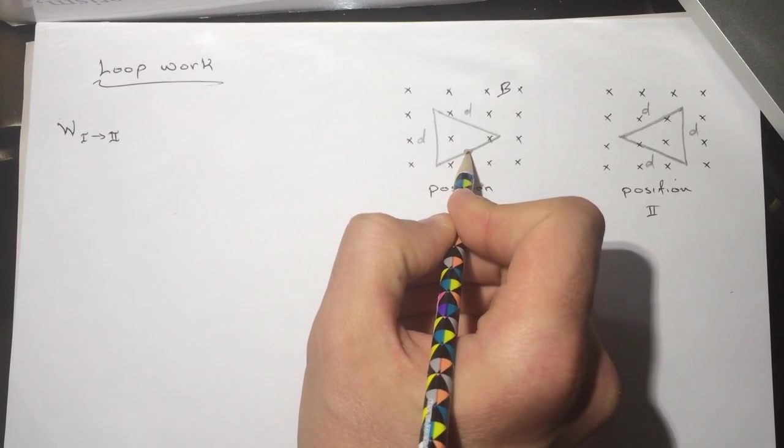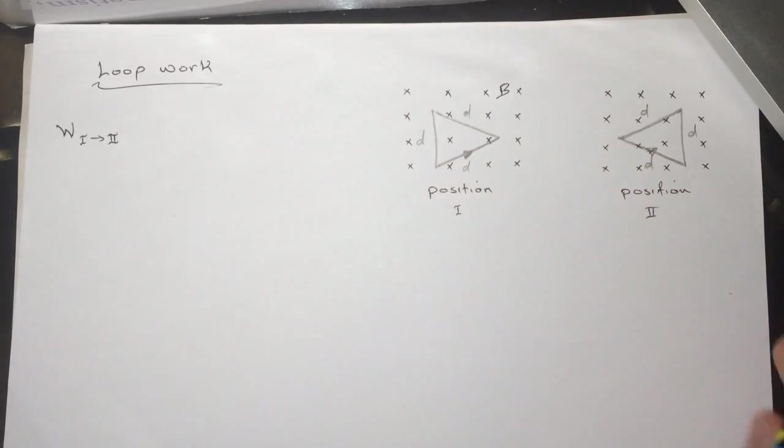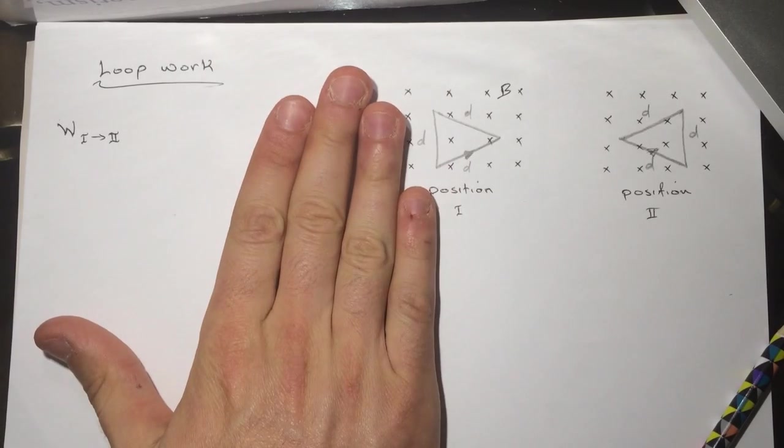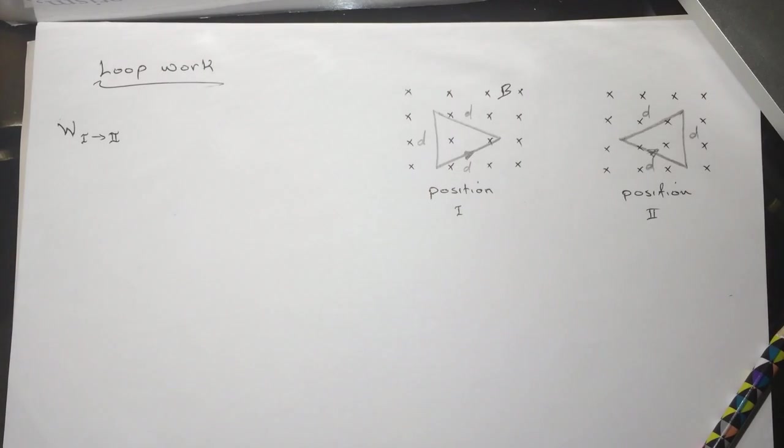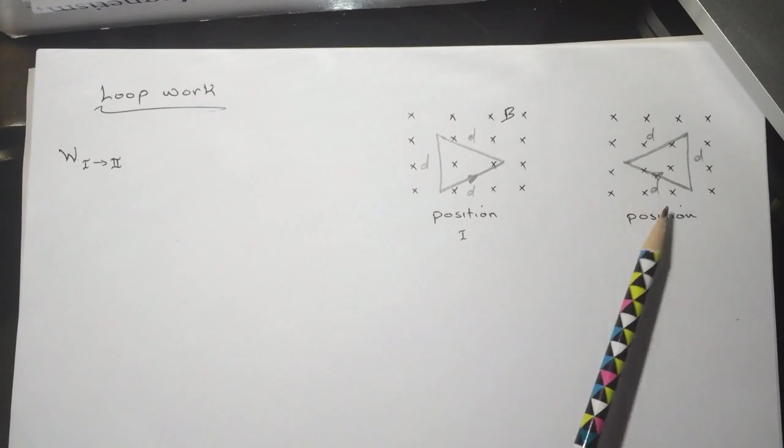The current is going this way. So we simply took this one like this and took it to the side. They want the work done from this position to this position.